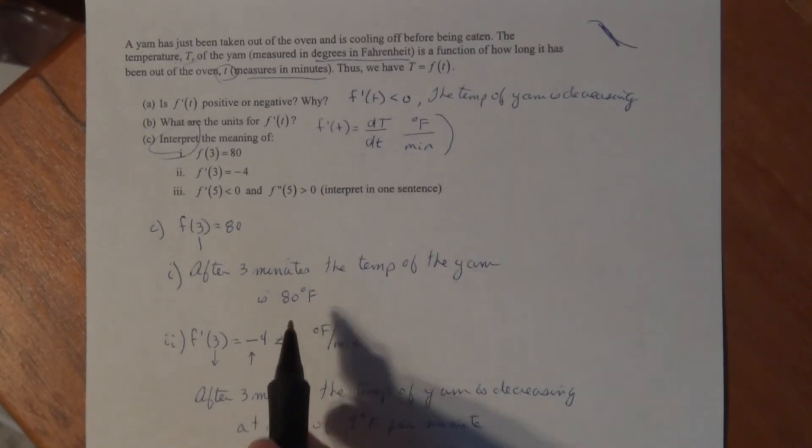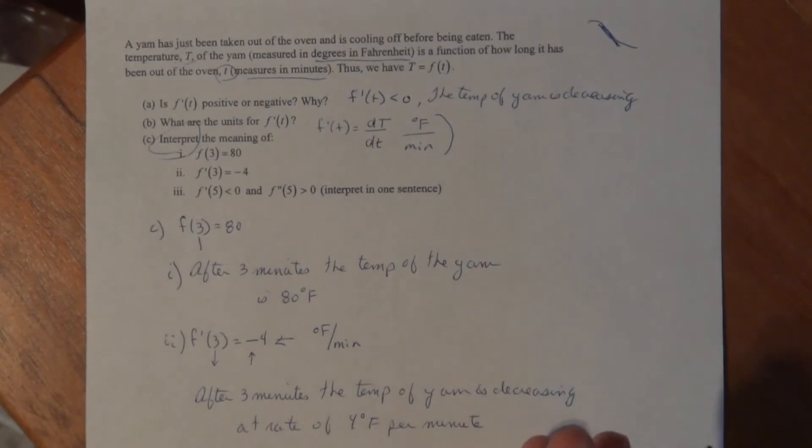Downward. So instead of being 80, after one more minute it'll be approximately 76. Now, part three gives us this strange information that most people don't like.